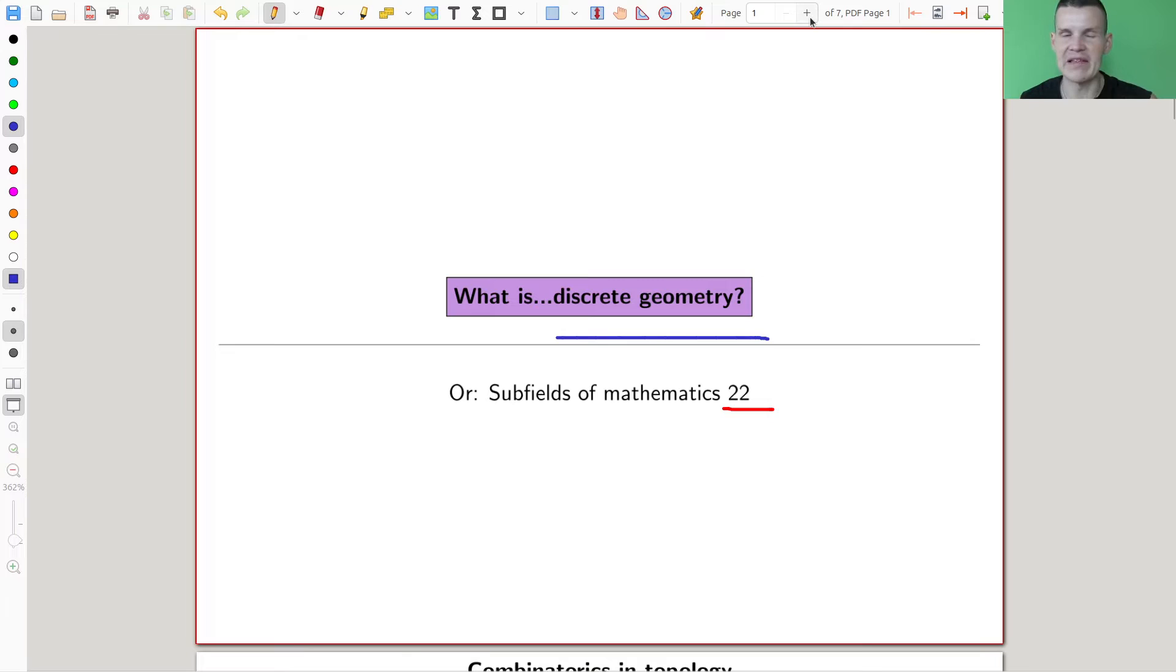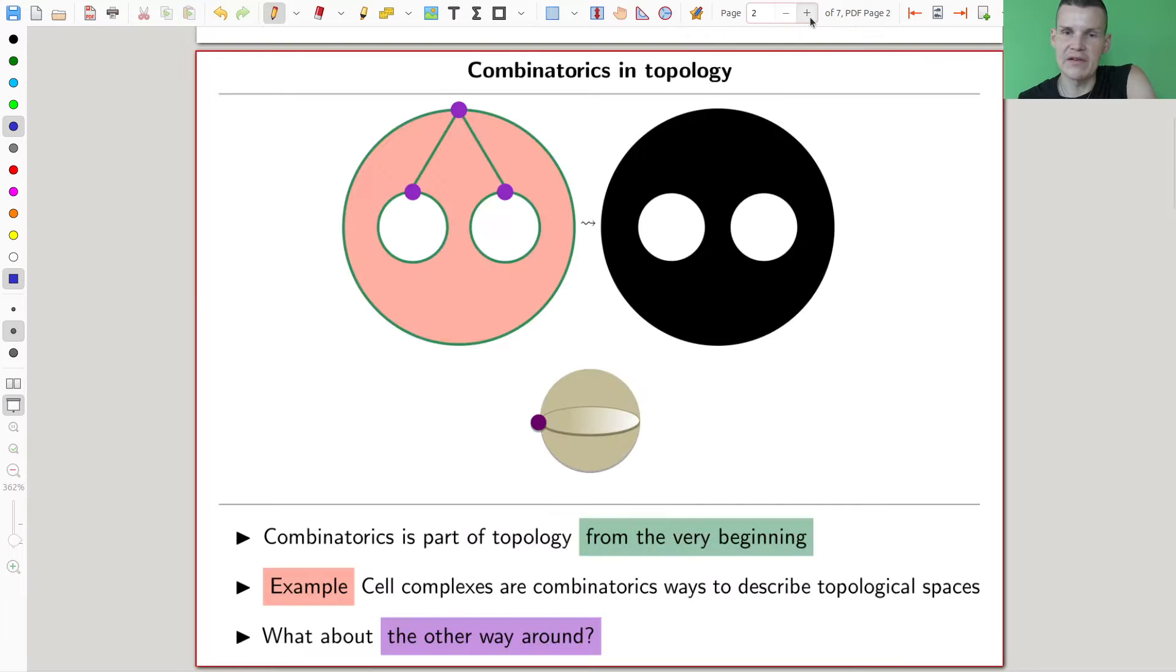So what do I mean by that? As I said, I will focus more on the topology part of the game. Essentially, it should be something like combinatorics around in topology. So combinatorics is around in topology since the very beginning, actually.